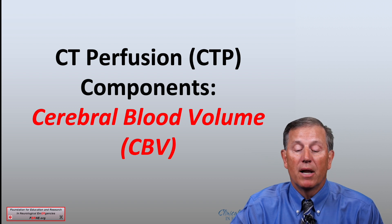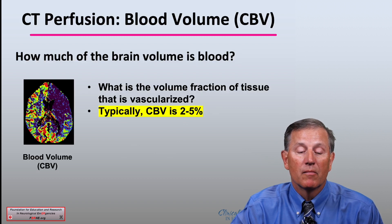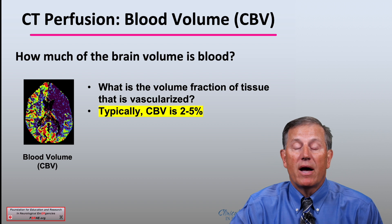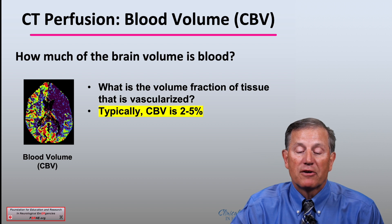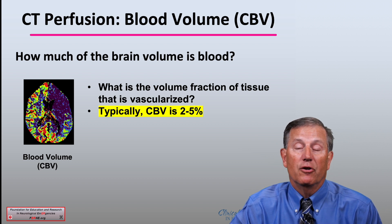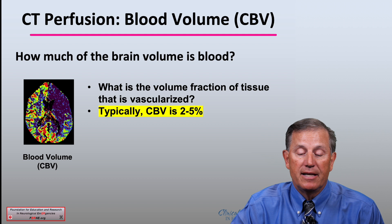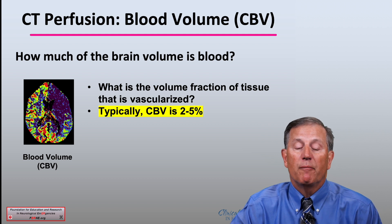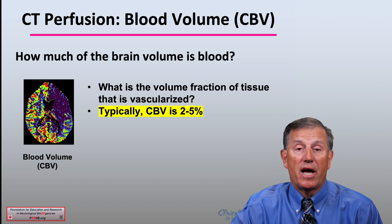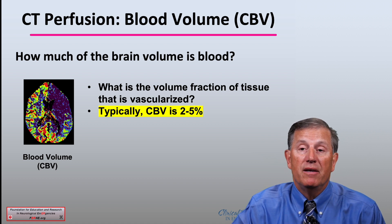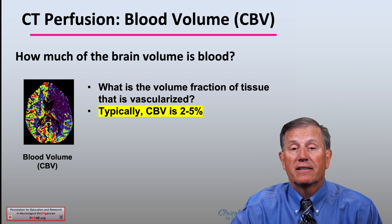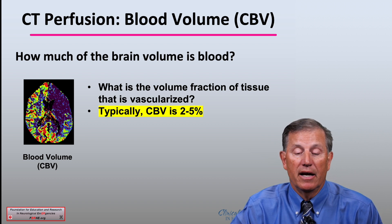The first component is cerebral blood volume, CBV. With CBV, you ask the question: how much of the brain volume is blood? What is the volume fraction of tissue that is actually vascularized and includes blood? Typically the CBV is two to five percent. When considering a cutoff that would suggest a core infarct, we look at comparisons in CBV from the affected side as compared to the normal side.